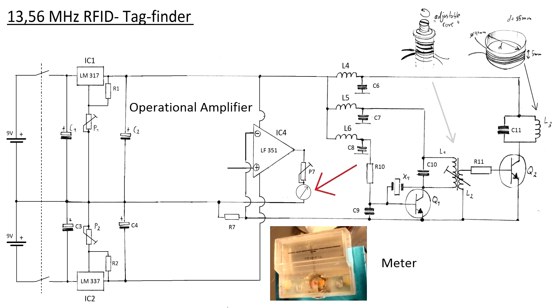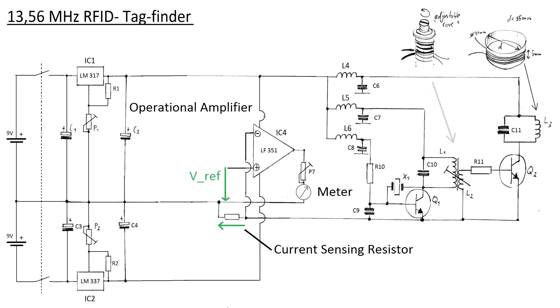The op-amp, which is configured as a differential amplifier, is comparing the voltage across a current sensing resistor to a fixed reference voltage. The voltage across the current sensing resistor is directly proportional to the current through the RF section, which is mainly comprised of the emitter current of transistor Q2. This current slightly increases as soon as an RFID tag comes near the detector coil.